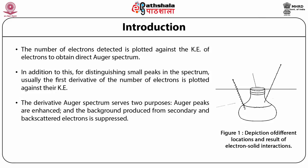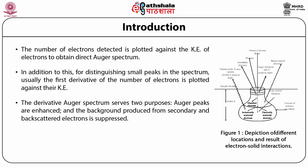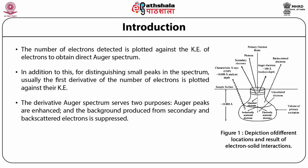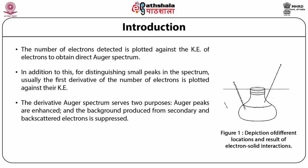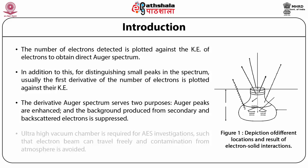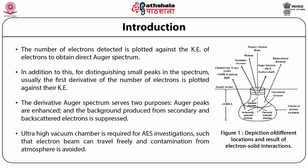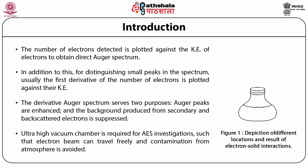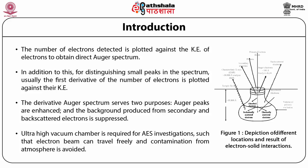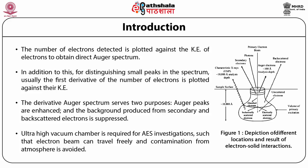The derivative Auger spectrum serves two purposes: Auger peaks are enhanced and the background produced from secondary backscattering electrons is suppressed. An ultra-high vacuum chamber is required for AES investigations so that the electron beam can travel freely and contamination from the atmosphere is avoided.